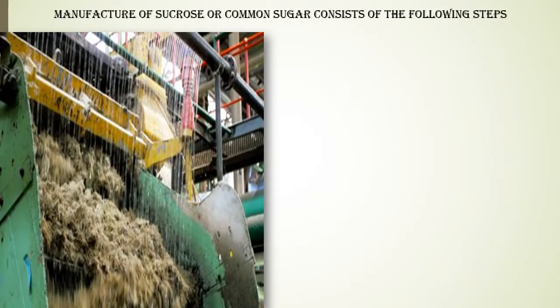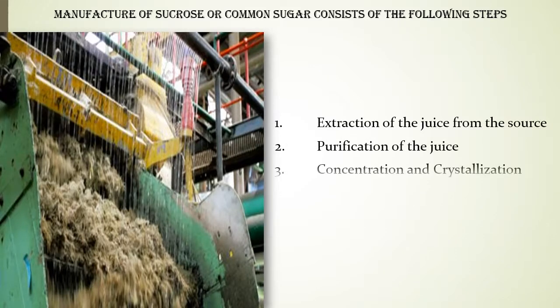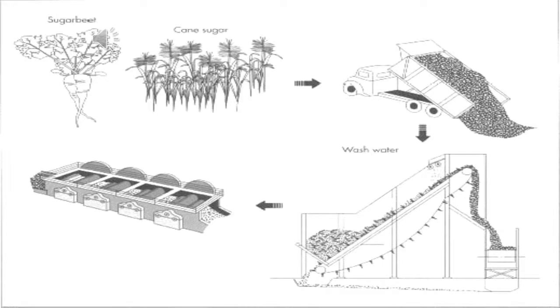The manufacture of sucrose, or common sugar, consists of the following steps: first, extraction of the juice from the source; second, purification of the juice; third, concentration and crystallization; and fourth, separation and drying of crystals.